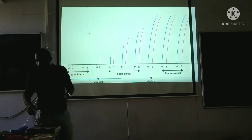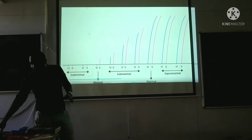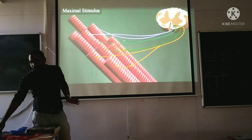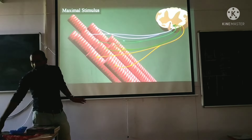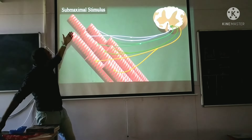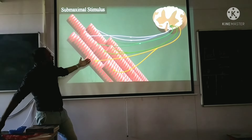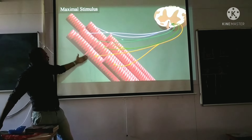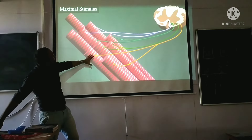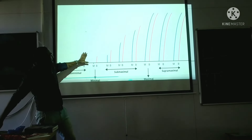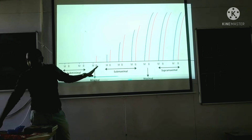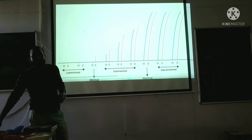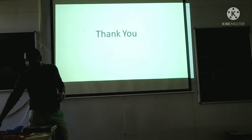So this was all about the effect of strength of stimuli on muscle contraction. In make stimulus, not all motor fibers are recruited. At submaximal stimulus, some are recruited, and at maximal stimulus, all are recruited. Thank you so much guys, thank you very much.